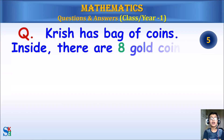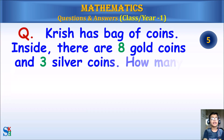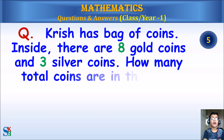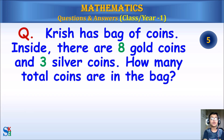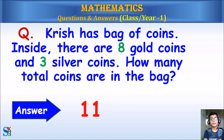Quresh has a bag of coins. Inside there are eight gold coins and three silver coins. How many total coins are in the bag? Answer: 11. 8 plus 3 is 11.